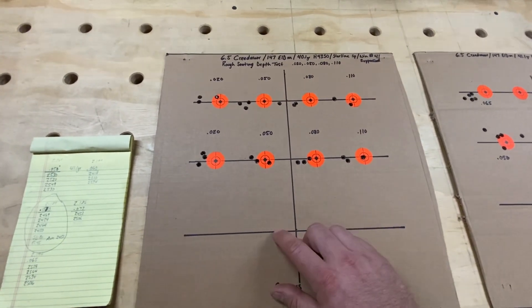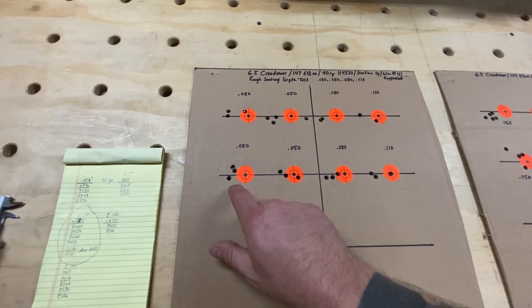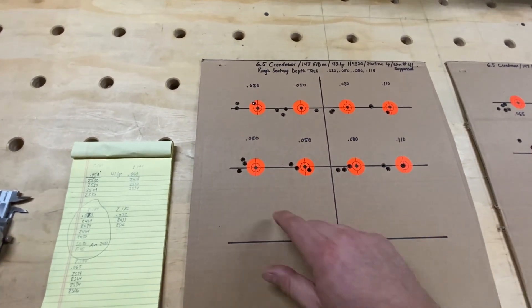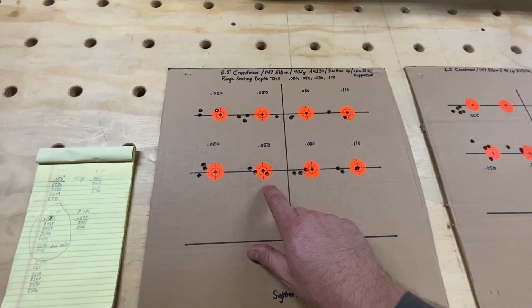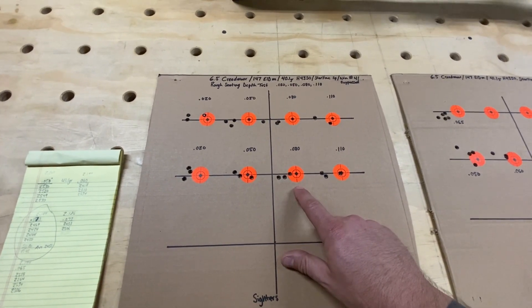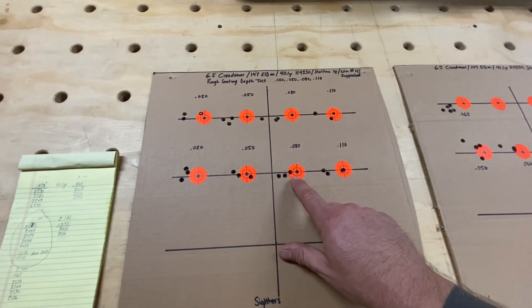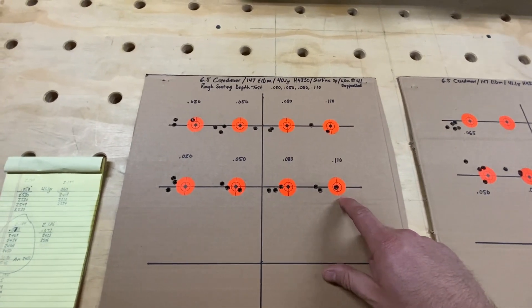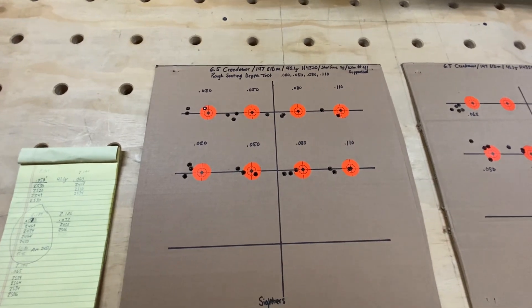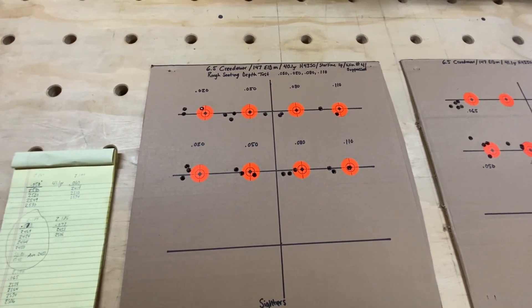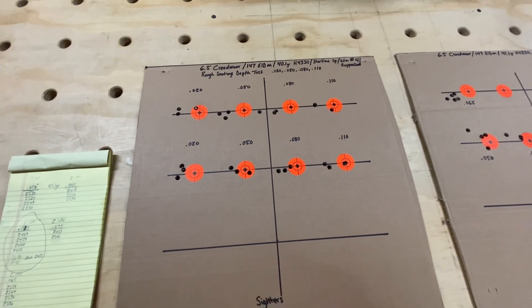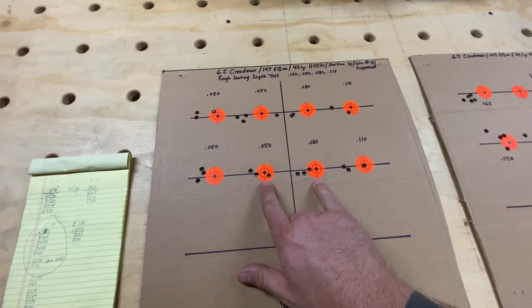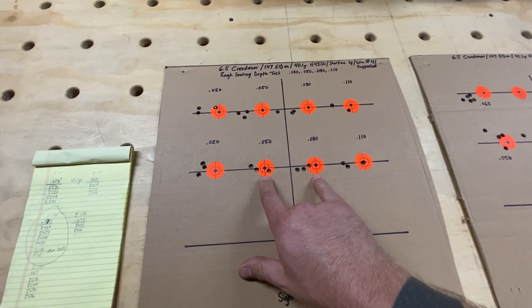So I went out and I shot two separate three round groups at 20 thousandths off the lands. You can see both these, then I did 50 thousandths off the lands. I kind of followed Berger's VLD seating depth testing. You can see 80 thousandths off and then 110 thousandths off the lands. And what I'm looking for is one of these ranges that shoots significantly better than the others. And I didn't feel like I found one that was like great, but I did see that both of these between 50 and 80, I think I can work with these.